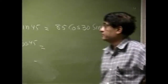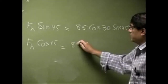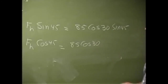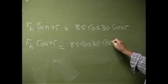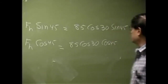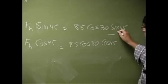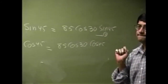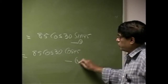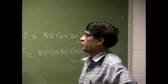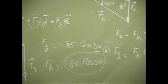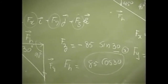All here: Fx equals 85 cosine 30 times sine 45. Fy equals 85 cosine 30 times cosine 45. This equation here gives you the magnitude for the x-component, this equation here gives the magnitude for the y-component, and this equation here is the magnitude for the z-component, which is negative 85 sine 30.